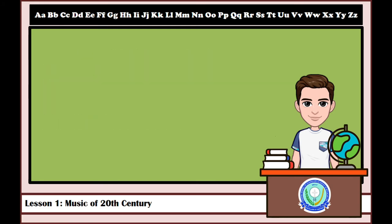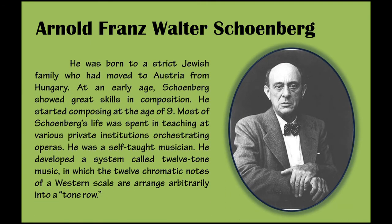Let us meet the composers under Expressionism. Arnold Franz Walter Schoenberg was born to a strict Jewish family who had moved to Austria from Hungary. At an early age, Schoenberg showed great skill in composition, starting to compose at the age of nine. Most of his life was spent teaching at various private institutions and orchestrating operas. He was a self-taught musician who developed a system called twelve-tone music, in which the twelve chromatic notes of a western scale are arranged arbitrarily into a tone row.